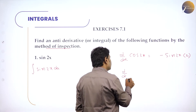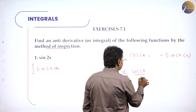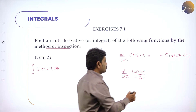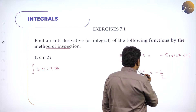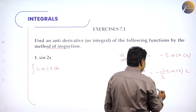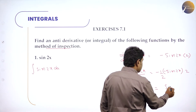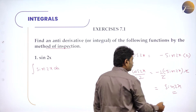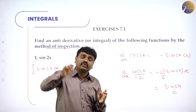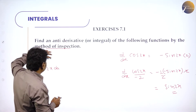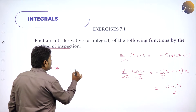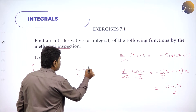So in my next step I take d/dx of cos 2x divided by 2. I am inspecting, and I don't want the minus either, so I introduce minus 2. What is d/dx of cos 2x by minus 2? Minus 1 by 2 is constant — take it out. Derivative of cos 2x is minus sin 2x into derivative of 2x which is 2. Simplifying: minus into minus becomes plus sin 2x, and the 2s cancel, leaving sin 2x. So if I differentiate cos 2x by minus 2, I get sin 2x, and the answer is minus 1 by 2 cos 2x.